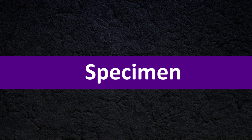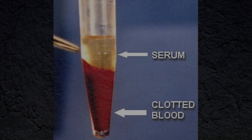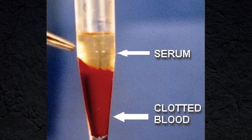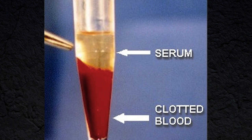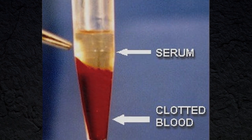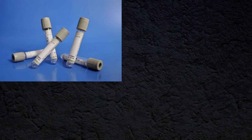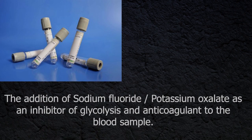Specimen: Serum must be separated from the red cells promptly to prevent glycolysis. The addition of sodium fluoride or potassium oxalate as an inhibitor of glycolysis and anticoagulant to the blood sample is recommended.